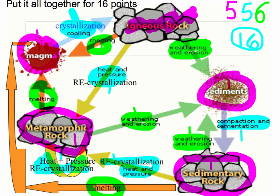If you put it all together using the color code scheme, you get five places rock or rock material can be, five in arrows showing how rocks form, and six out arrows showing how rocks are destroyed — for a grand total of 16 different arrows. Yee-haw!